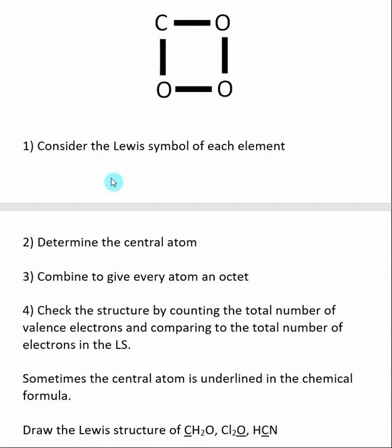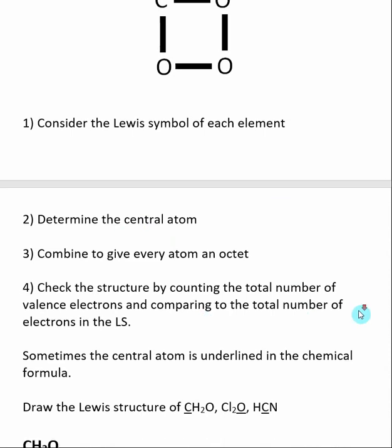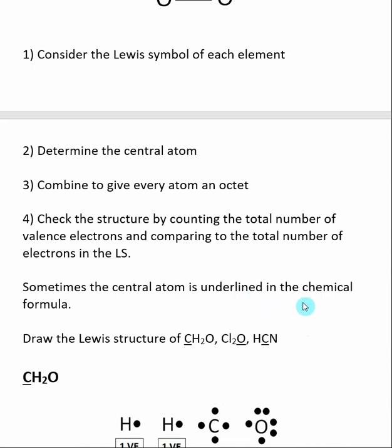When drawing a Lewis structure, you consider the Lewis symbol for each element. Then you try to determine the central atom, and then we combine them to give an octet. We get rid of the unpaired electrons by bonding. Then we check our structure by counting the total number of valence electrons and dividing by two, which tells us how many electron pairs our answer should have. Often in questions that involve Lewis structures, the central atom is underlined in the chemical formula.